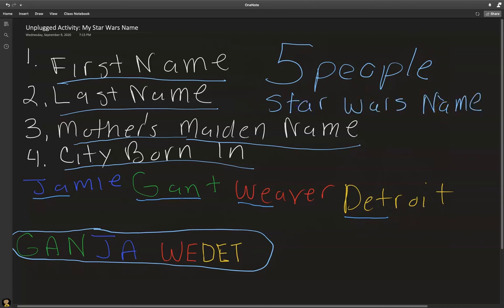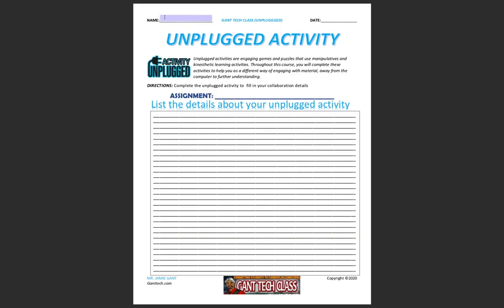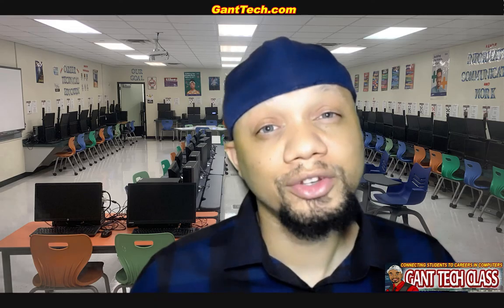When you're done, go complete the unplugged activity document. Type in your name at the top, then the date. For the assignment, type in your Star Wars name. In this section, type in the details of your unplugged activity — for example, Ganja Weedet came from Jamie Gantt, Weaver, and Detroit. Add the other five people you completed the Star Wars name for. Once you complete this assignment, save the document and turn it in to your teacher.